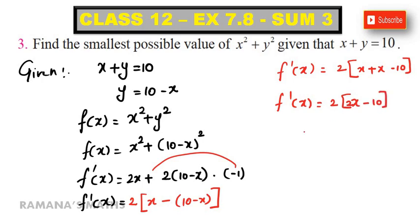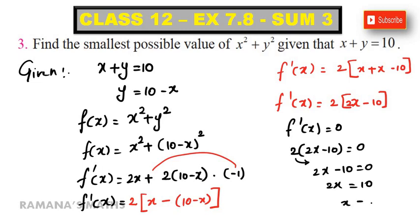To find the critical value, set f dash of x equal to 0. 2 into 2x minus 10 is equal to 0. 2x minus 10 is equal to 0. So 2x is equal to 10, x is equal to 10 by 2, which is 5.